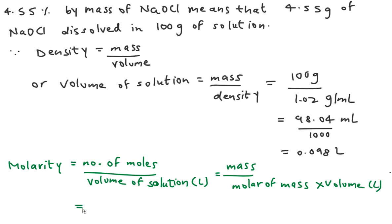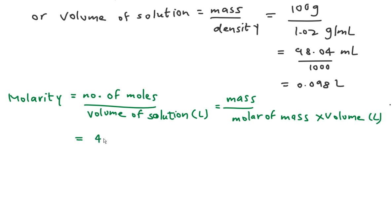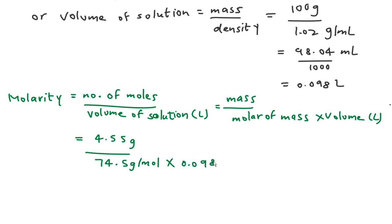Putting in the values: 4.55 gram divided by molar mass 74.5 gram per mole, divided by volume of solution 0.098 liter. Solving this we get 0.623 mole per liter, or we can write 0.623 molar — that is the molarity.